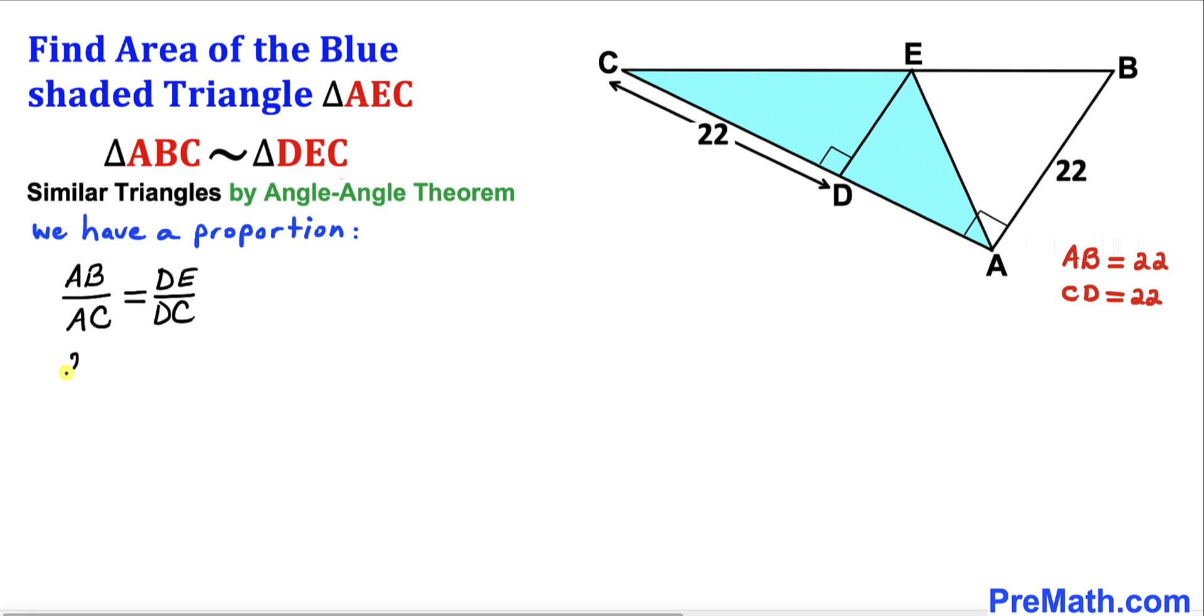Therefore, I can write 22 divided by AC equals DE divided by 22. Now let's go ahead and cross multiply.